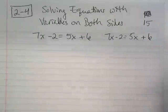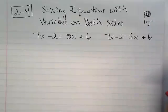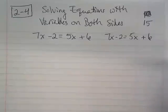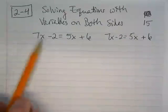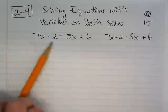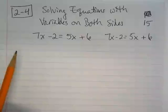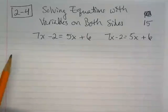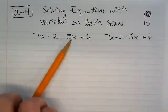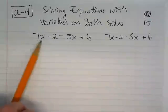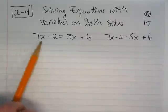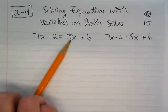The big question I get with these is how do I know which thing to subtract or add first, and it doesn't really matter. When I look at this equation, I see 7x minus 2, and on this side I see 5x plus 6. I want to think about this as combining like terms across the equal sign. I need to get this 5x on the same side as the 7x, or the 7x on this side with the 5x. We just decide which one we're going to subtract first.